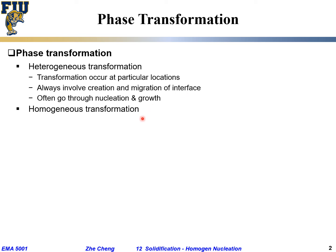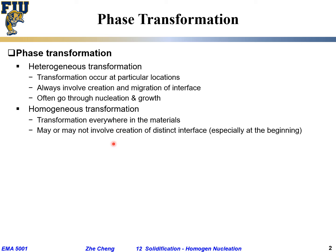In comparison to heterogeneous nucleation, homogeneous nucleation — 'homo' meaning uniform — is not occurring at a specific location. It transforms everywhere within the material, not just at a surface or grain boundary. It may or may not involve the creation of a distinct interface. Homogeneous transformation is happening everywhere, and in many cases at the beginning it may not involve a distinct interface, which makes it very hard to tell what phase is what initially.